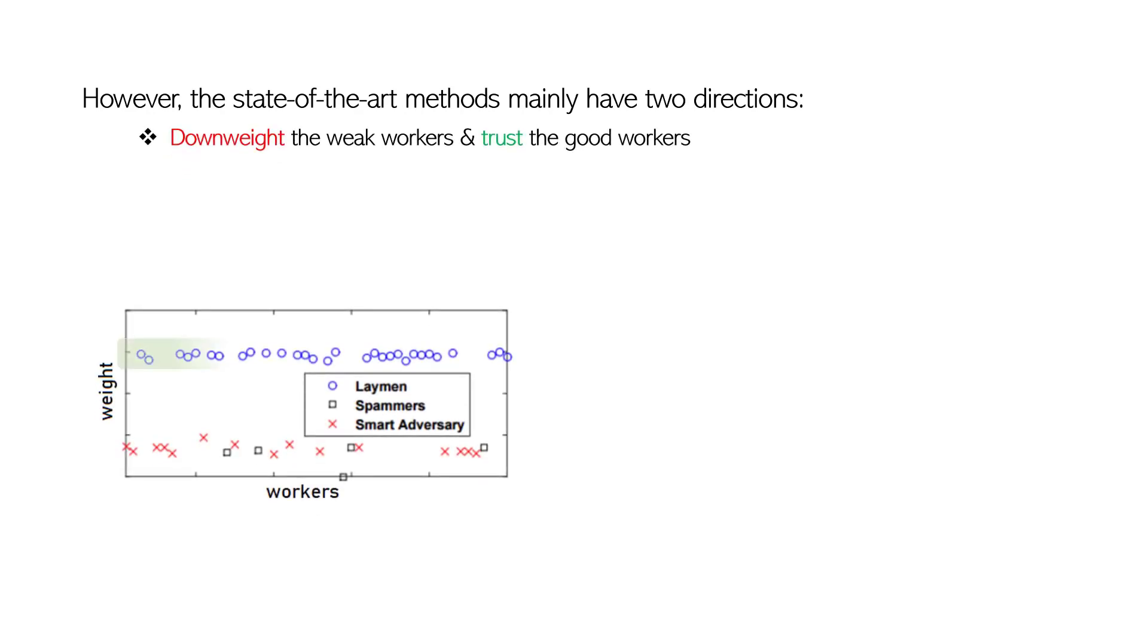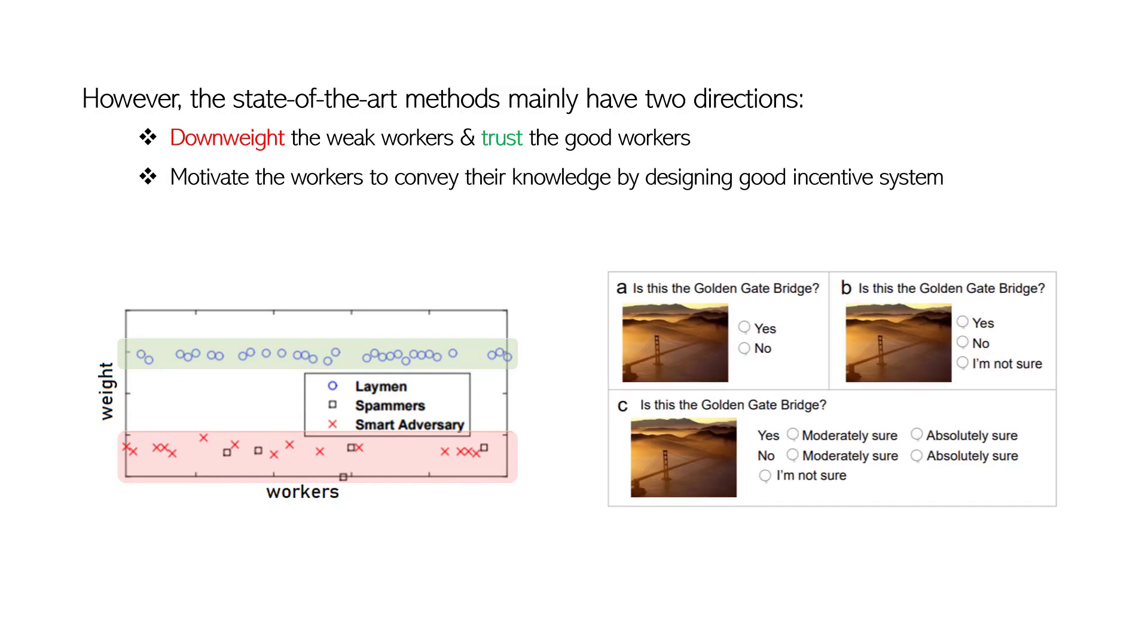To deal with this problem, currently there are two main research directions. The first group of approaches tend to give lower weights for the weak workers but give higher votes for the good ones. The second group of researchers are working on designing better incentive schemes. However, they all omitted one important fact.